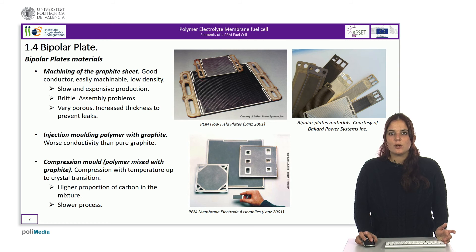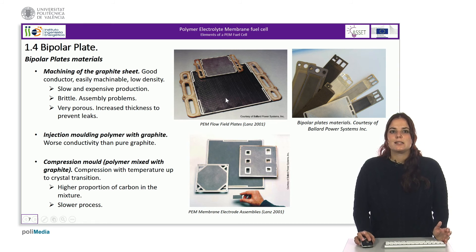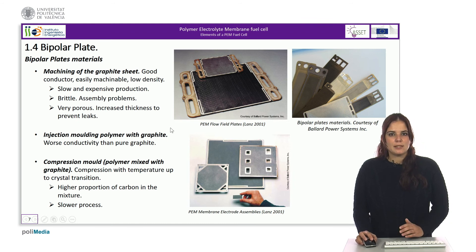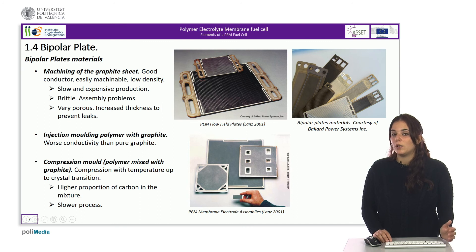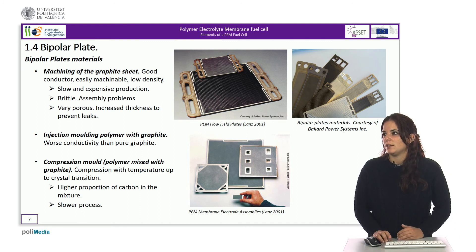In the image at the top we can see different examples of bipolar plates with a serpentine distribution. It can be seen where the gas supply and outlet channels are located, which in turn become the gas inlet of the next cell.